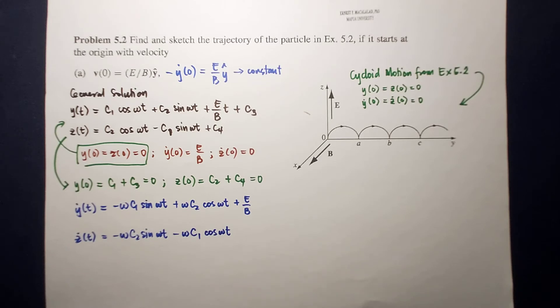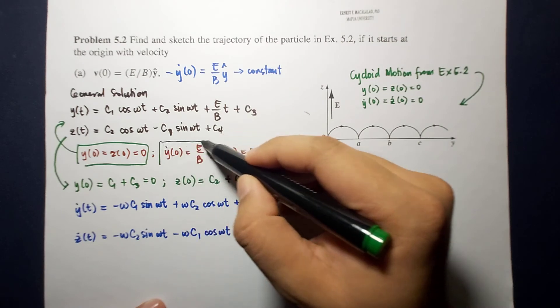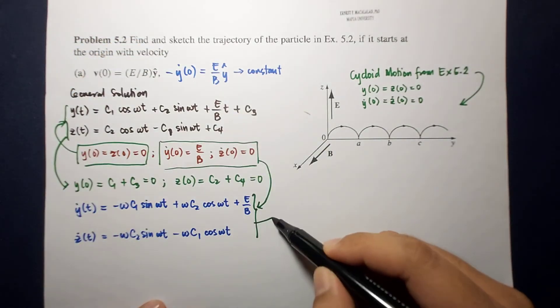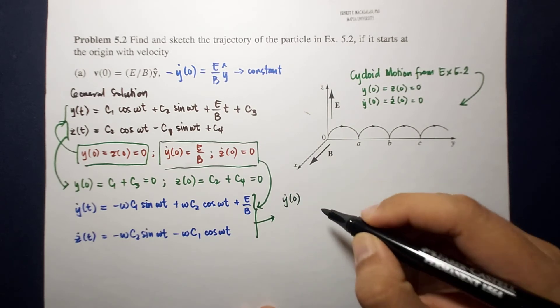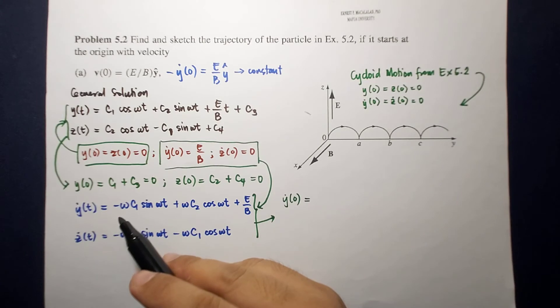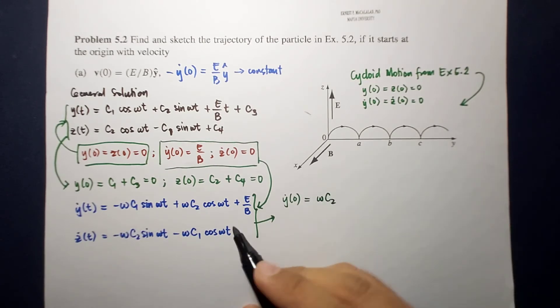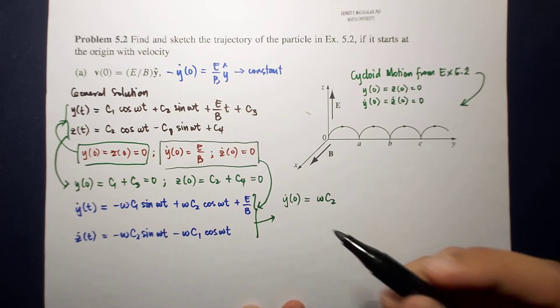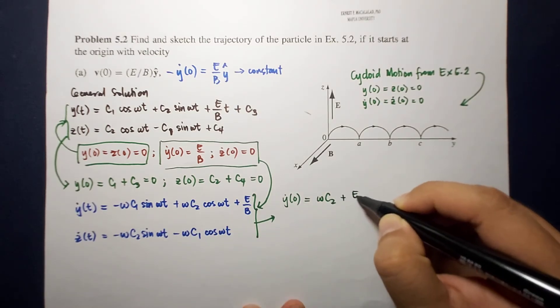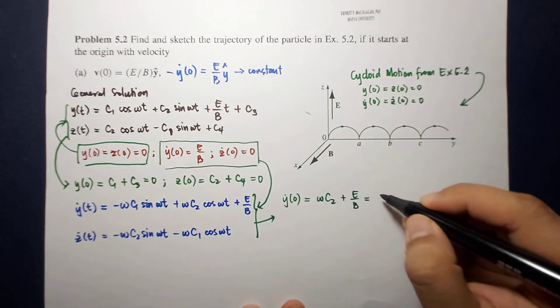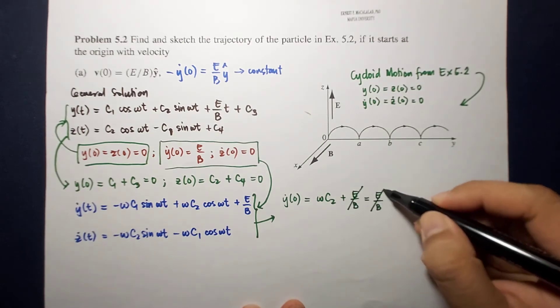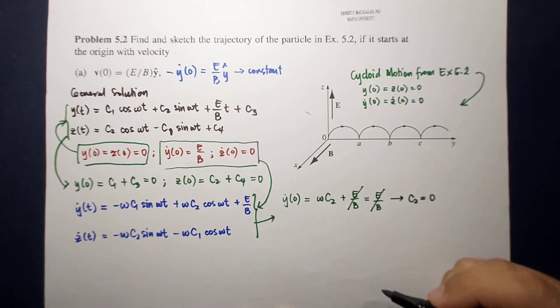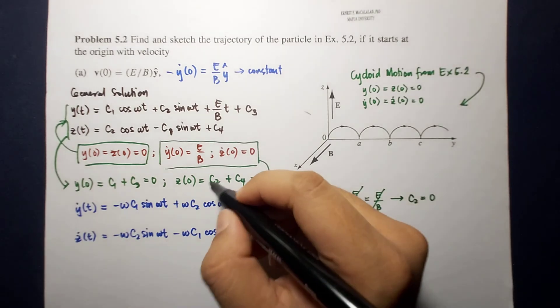So, what does it mean? It means that if we're going to substitute this here, y dot at time equal to 0 will be equal to omega c2 because time is equal to 0. So, this is omega c2 plus e over b, and this is equal to e over b. So, this cancels. The result is c2 equals 0.